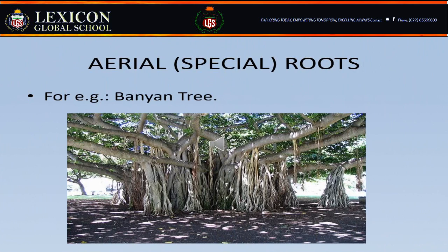Some plants have special aerial roots — roots which grow above the ground. These roots grow downwards from the branches of the tree towards the soil. The banyan tree is the best example of aerial roots.